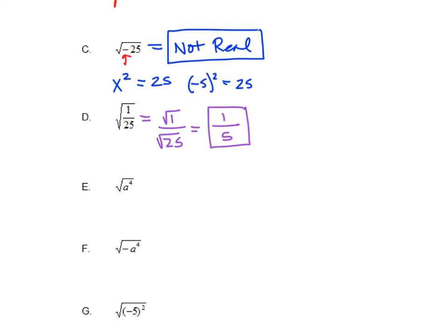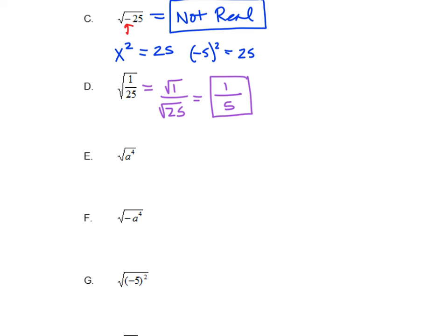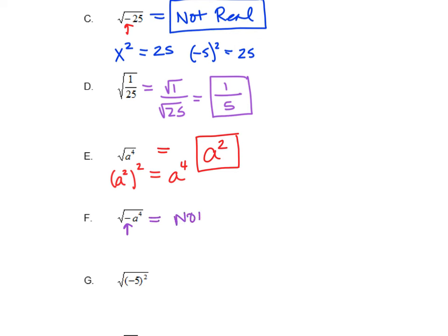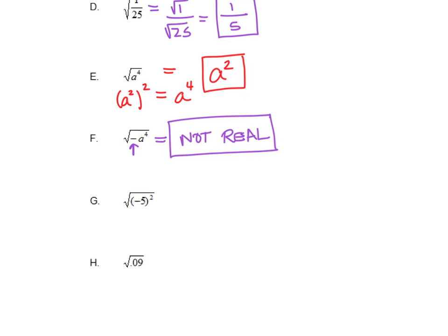Letter E: we're taking the square root of a to the 4th. You can think about it as: what are we squaring to get a to the 4th? Well, a squared, squared — using your exponent properties you multiply those exponents and get a to the 4th. So the square root of a to the 4th is a squared. Letter F has a negative inside, and you can't take a square root of anything negative, so the answer is not real. Anytime you see that with square roots, we write that as our answer.